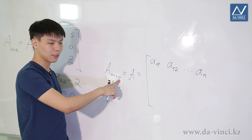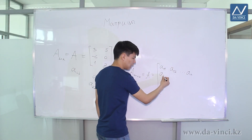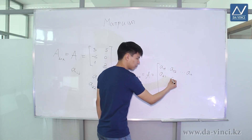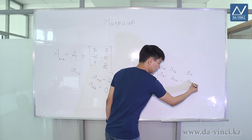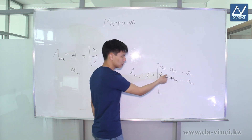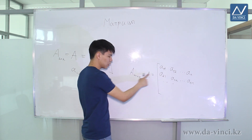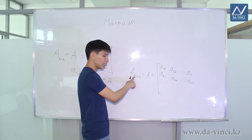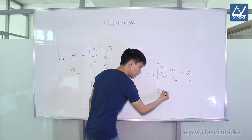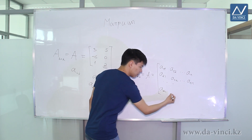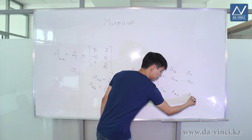We move on to the second row: A_{2,1}, A_{2,2}, and so on, A_{2,N}. And so on until the last row, which has number M, because we have M rows: A_{M,1}, A_{M,2}, and so on, A_{M,N}. This is how the matrix is generally denoted.